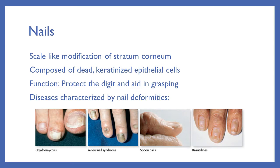Nails are scale-like modifications of the stratum corneum, composed of dead keratinized epithelial cells produced at the nail matrix and pushed forward. Their function is to protect the digit and aid in grasping — in animals they serve more offensive purposes as claws, but in humans mainly for protection. Because the body is always producing nails, improper minerals or anything affecting keratinized cell production will cause nail malformations, which can actually be used to diagnose diseases.